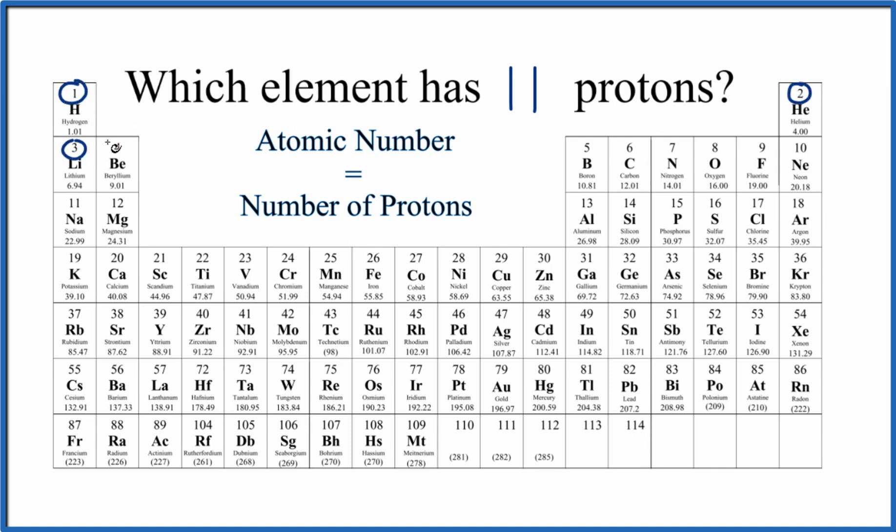We go across periods on the periodic table, the rows. The atomic number increases, the number of protons increases. And when we get to 11, right here, atomic number 11, that means we have 11 protons.